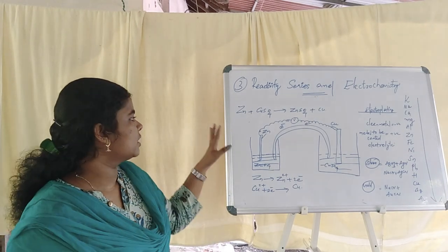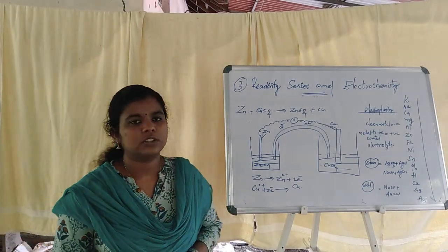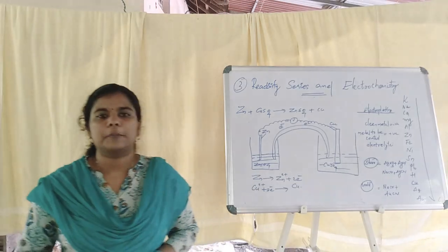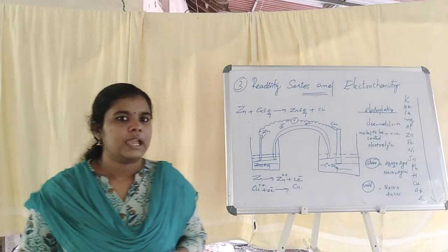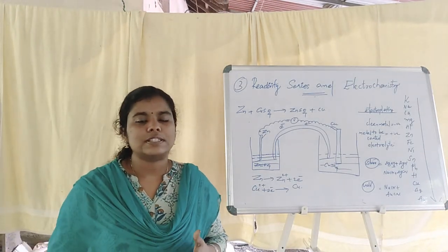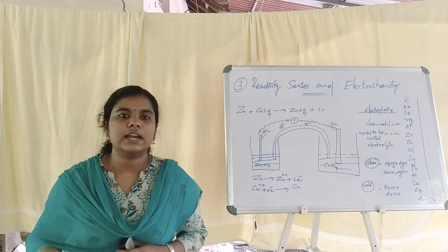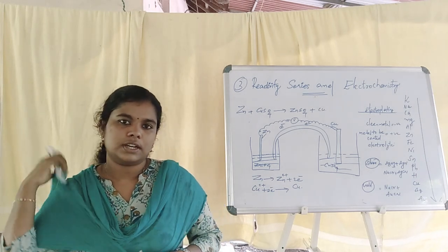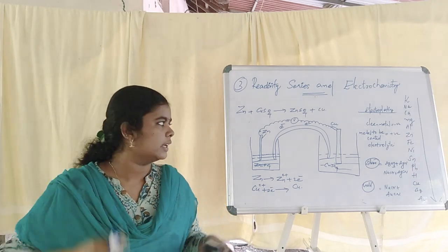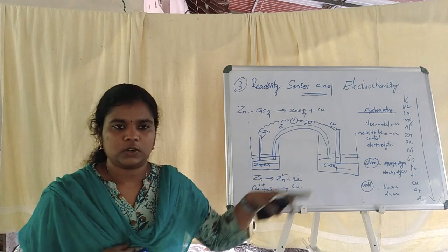In the third chapter, there are a few points. The first point is the Galvanic Cell — what is a Galvanic Cell, its structure, its function, and the set-up.